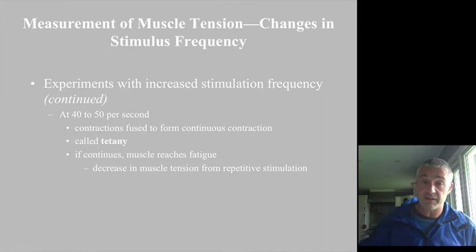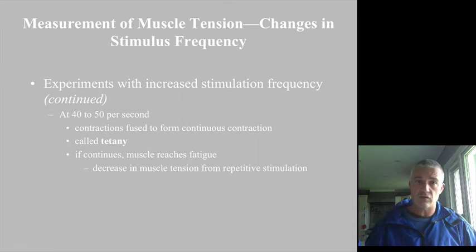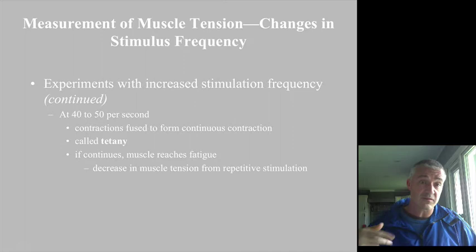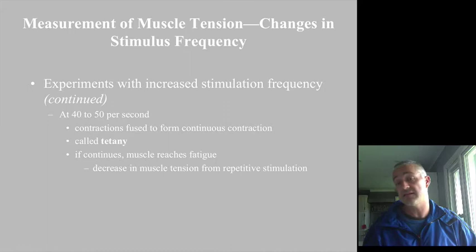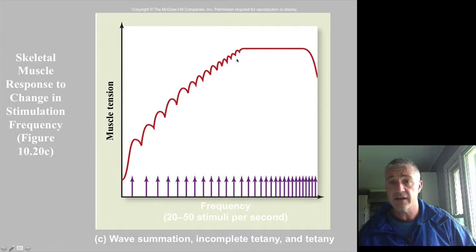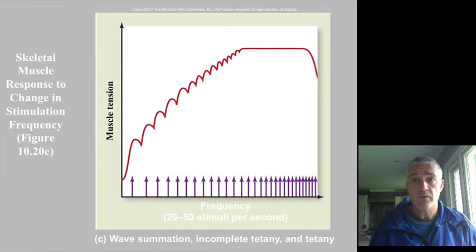At 20 to 40 Hz, you get what is called wave or temporal summation, and this produces incomplete tetanus. Above 40 to 50 per second, you get a sustained contraction with no relaxation and no loss of force whatsoever — this is tetanus or tetany, the muscle going into full-on contraction. For example, standard electrical outlets are 120 volts at 60 hertz, which is 60 cycles per second — if you grabbed something electrified, you would go into full tetanus. The incomplete tetanus range shows building contraction with no relaxation, and above 50 per second you get full tetanus where the muscle is unable to relax until the electrical stimulation is removed.